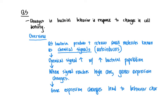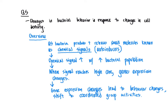The gene expression changes that result from quorum sensing lead to changes in behavior — generally a massive shift toward very group-oriented, coordinated group activities. The behaviors controlled by quorum sensing are traits that would not be particularly useful to a bacterium acting as a single cell, but when large numbers of that species are present, those behaviors lead to the success of that population as a whole.